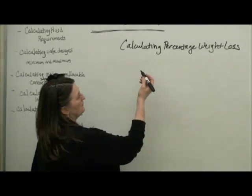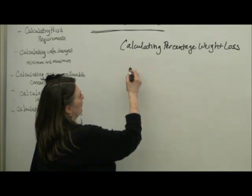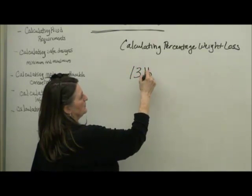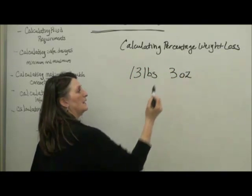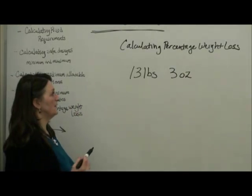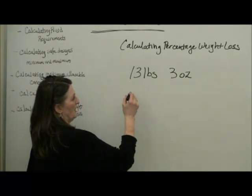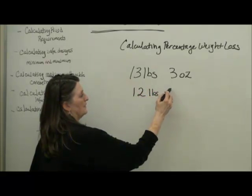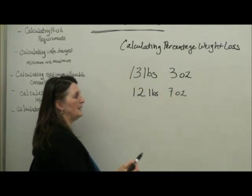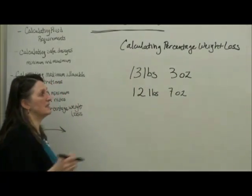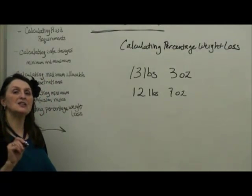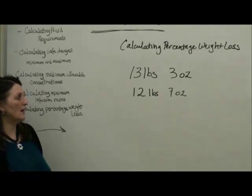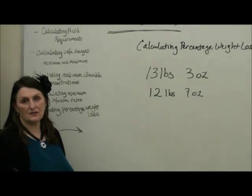If the example says your patient weighed 13 pounds 3 ounces and now comes to the hospital with clinical signs of dehydration, and the child now weighs 12 pounds 7 ounces, we need to figure out how much weight this child lost and what is that total percentage of their healthy pre-illness weight, because we categorize dehydration severity based on the percentage of weight loss.